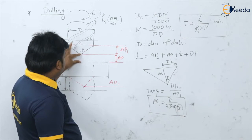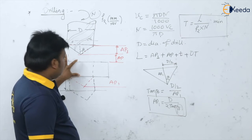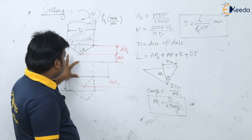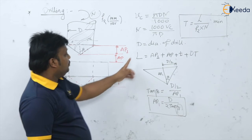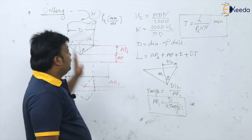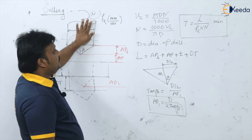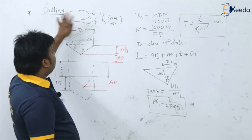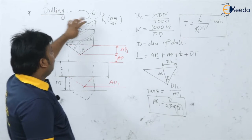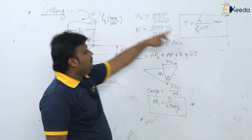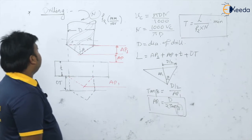To summarize: the compulsory approach ap1 is always included; for a through hole, add the entire thickness; add over travel if given. Divide total length L by feed F2 and RPM N to get the machining time for the drilling operation.